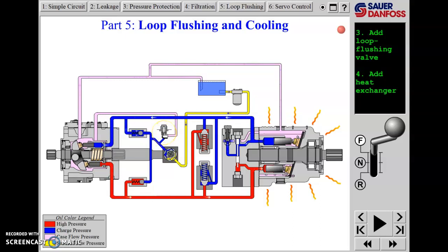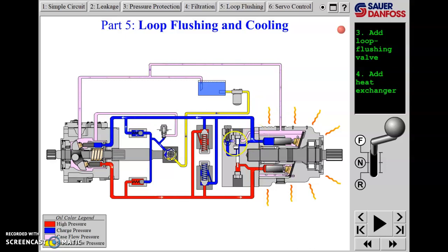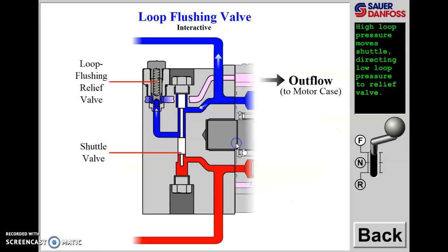This flushing relief performs basically the same function as the neutral charge relief. Sometimes the neutral charge relief maintains charge pressure at 200 PSI, and then we'll have a flushing relief set at 180 or 190 PSI — if the neutral charge relief is set at 200 — to manage charge pressure on the return side of the loop when we're flushing. If we zoom in on the flushing shuttle, we can understand its operation when in forward, with high pressure on one side of the drive loop driving the motor.